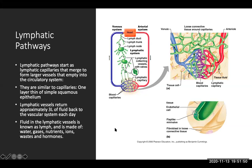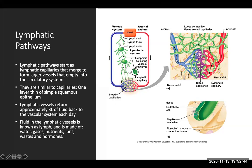Lymphatic pathways start at lymphatic capillaries that will merge into larger vessels that will empty into your circulatory system. They are similar to capillaries in that one layer of simple squamous epithelium is very thin. Lymphatic vessels will return approximately three liters of fluid back to the vascular system each day. Fluid in lymphatic vessels is known as lymph, and it's made up of water, gases, nutrients, ions, wastes, and hormones. They hang out around capillaries to pick up any excess fluid in the surrounding tissues.